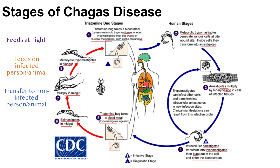Humans can also be infected by other means. One way is through blood transfusion — if an individual giving a blood transfusion has trypomastigotes within their blood, they can transfer them through blood-to-blood contact. Another way is through oral ingestion of Trypanosoma cruzi, usually through ingestion of the fecal material of the triatomine bug.